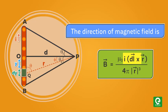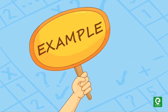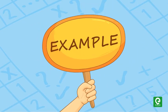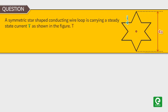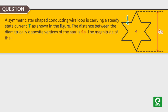Let's take an example to understand this concept better. Question: A symmetric star shape conducting wire loop is carrying a steady state current I as shown in the figure. The distance between the diametrically opposite vertices of the star is 4a. The magnitude of the magnetic field at the center of the loop is, hence option R. This question was asked in JEE Advanced 2017 exam.